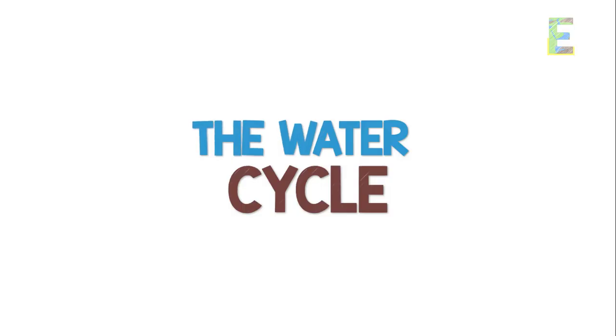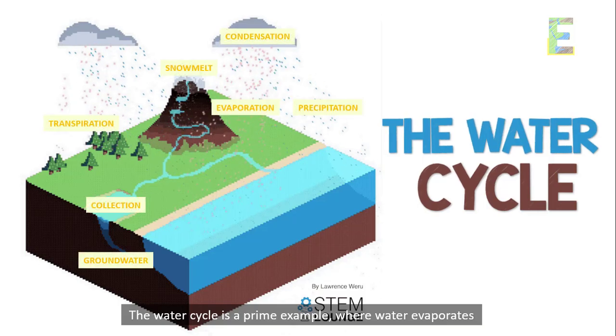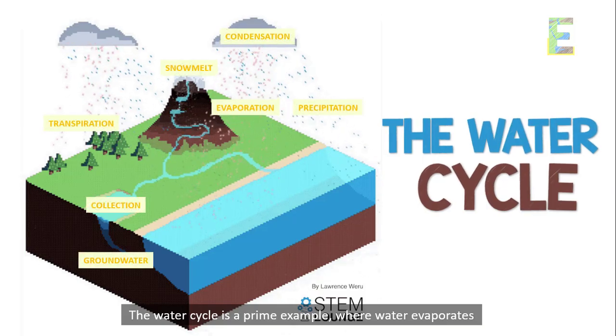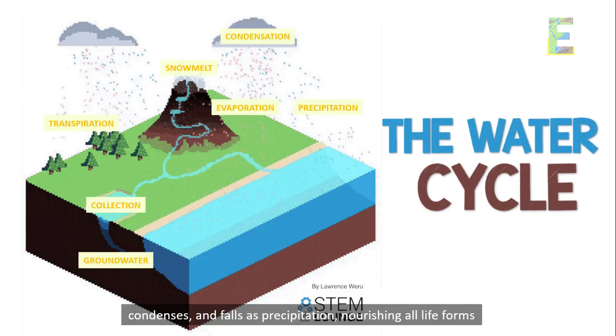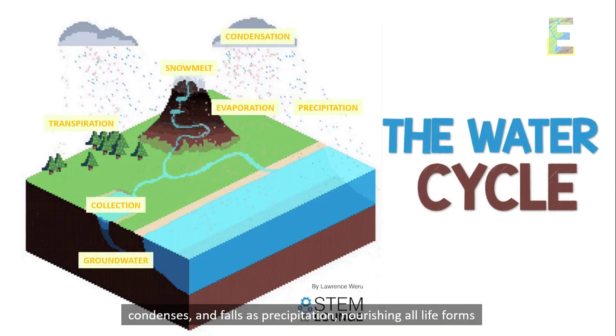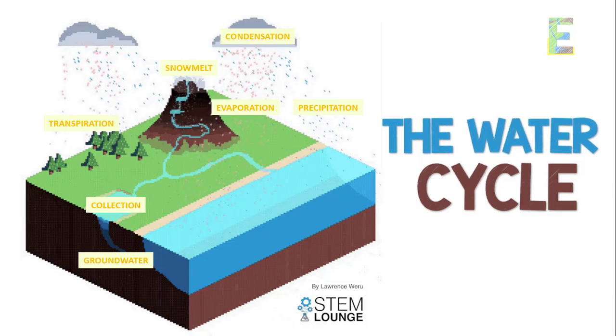The water cycle is a prime example, where water evaporates, condenses, and falls as precipitation, nourishing all life forms.